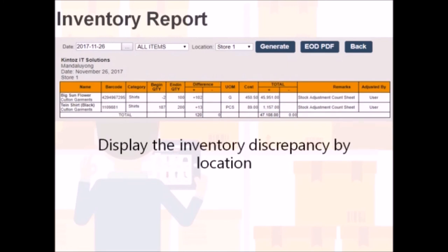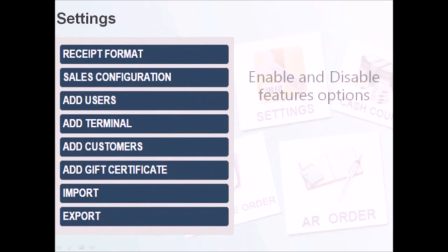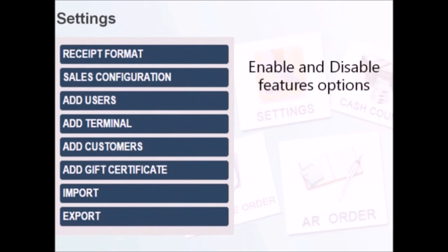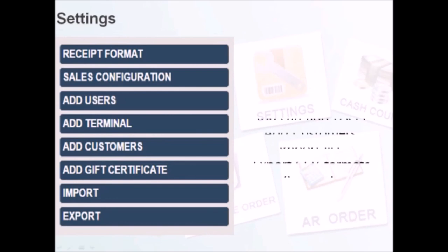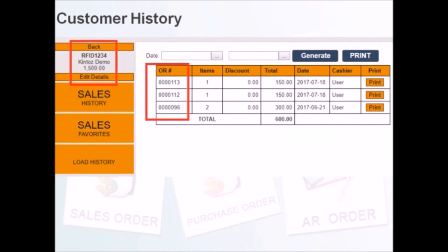The inventory report can include these variances and total cost of inventory. This report can also be filtered by choosing locations. Back on the settings module, the sales configuration can enable and disable certain feature options. Here, we can add the system's user accounts and customer profiles. More importantly, we can import data and export reports using CSV files. Here's an example of an existing customer profile for our RFID cards.